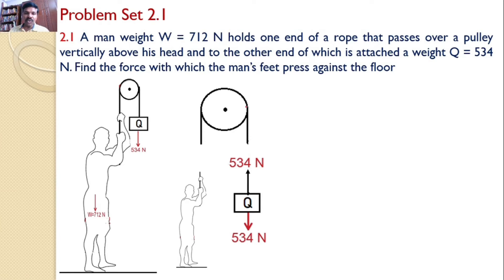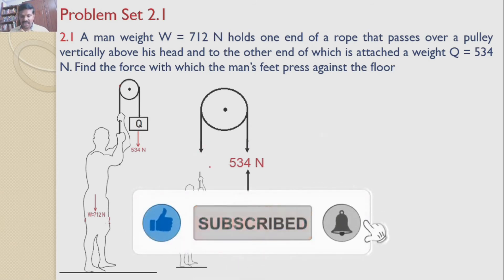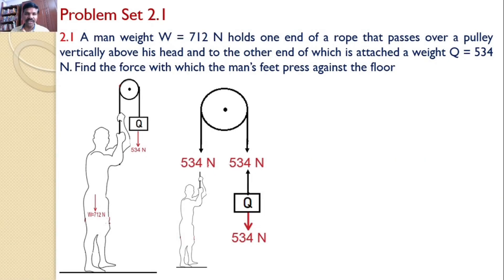The same rope passes over the pulley. In the free body diagram for the pulley, the force in the rope on one side must be downwards. To satisfy the equilibrium of the rope, the force on the other side must also be downwards with a magnitude of 534 Newtons on both sides.